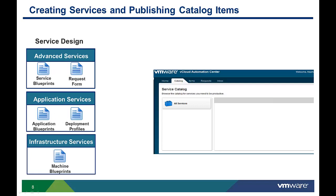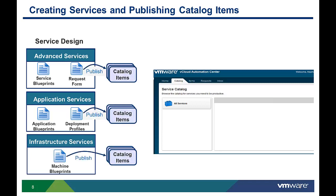A catalog item is defined in a blueprint or deployment profile, which provides a complete specification of the resource to be provisioned, the process to be used, the options available to the requester, and what day-two actions are possible. A service design can then be saved in a draft state and published as a catalog item when it is finished.